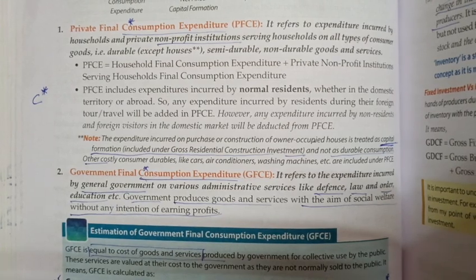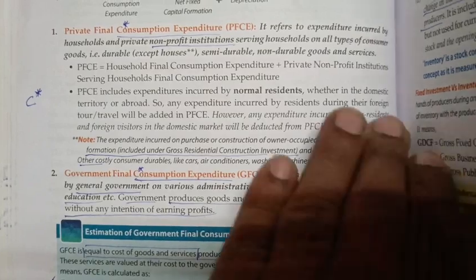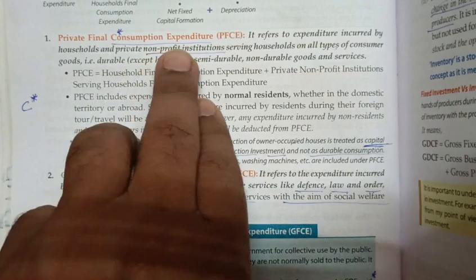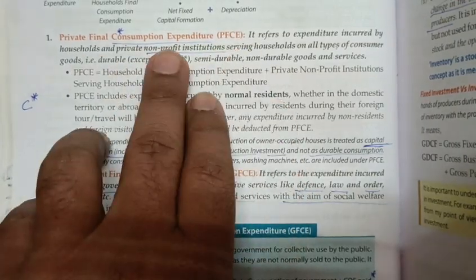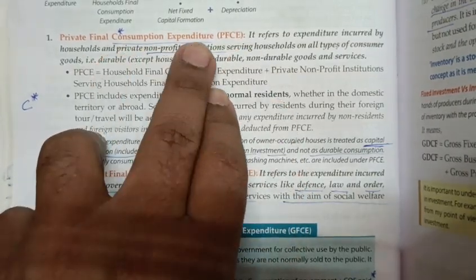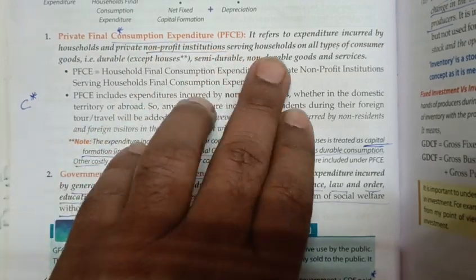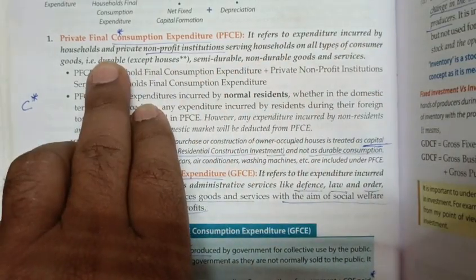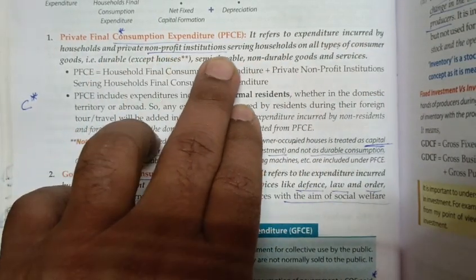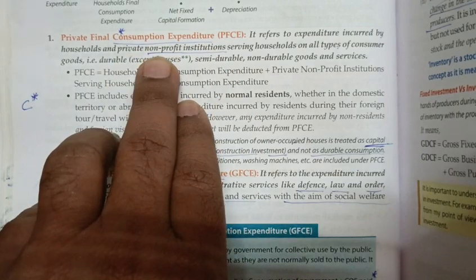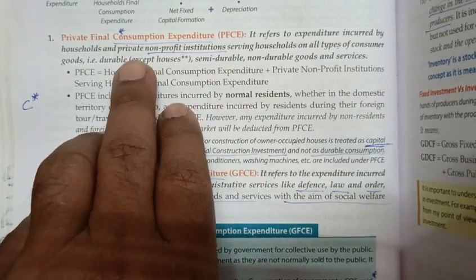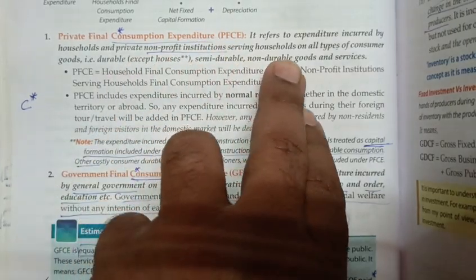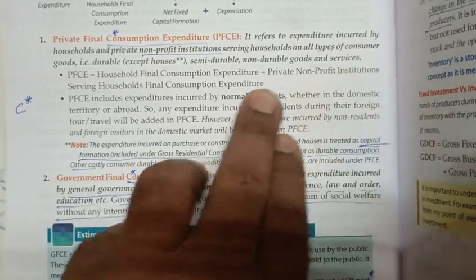Inventory investment, or change in stock, is calculated as closing stock minus opening stock. Now we will explain the next component: Private Final Consumption Expenditure, or PFCE. It refers to expenditure incurred by households and private non-profit institutions.